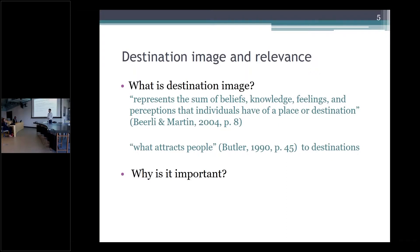What is destination image? According to Baloglu and McCleary, the factors that influence destination image are described as the sum of beliefs, knowledge, feelings, and perceptions an individual has of a place or destination. Destination image forms the key element of tourist destination decision-making. Destinations with a more positive and favourable image are more likely to be chosen by tourists. Building a favourable image by promoting destination attributes becomes important for developing destination competitiveness.